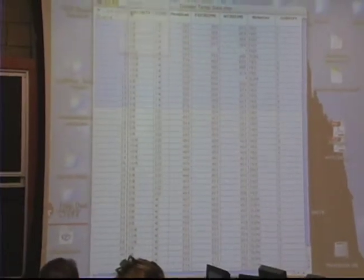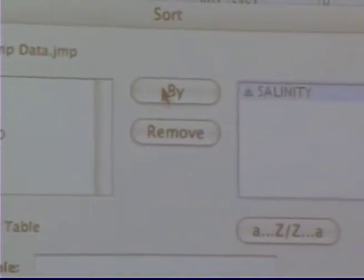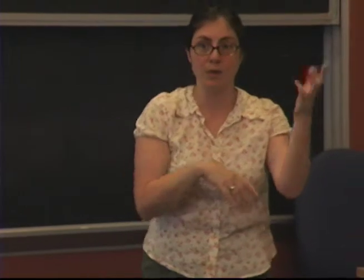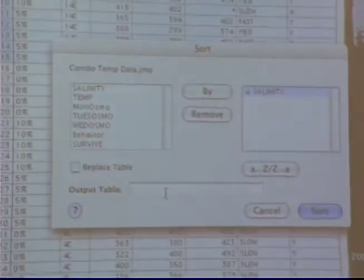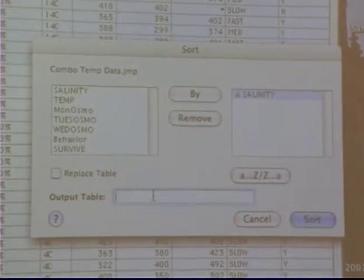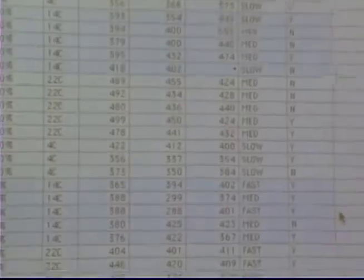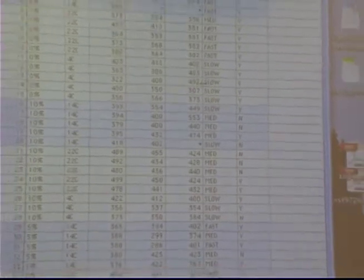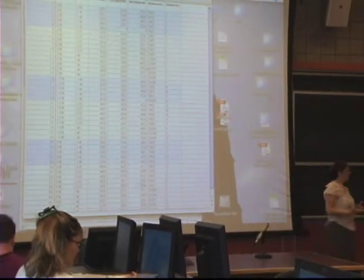But this is sorted by temperature. If I wanted to sort by salinity, I can go into sort. I can say salinity. And you can do multiple levels. You can do salinity first, then temperature. If you wanted to sort by osmo 1, it'll sort by that. And it makes a new table, actually. And you can name the new table whatever you want. Or it can replace. And I never tell them to replace. So now all the salinity needs at 0% are first.